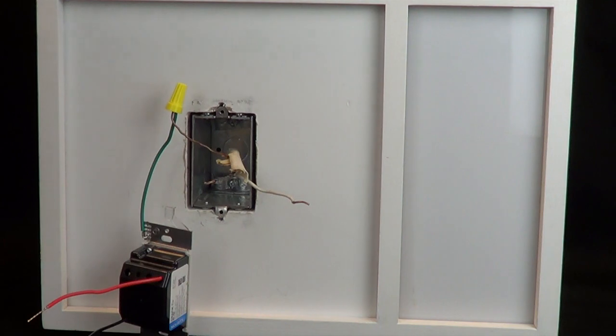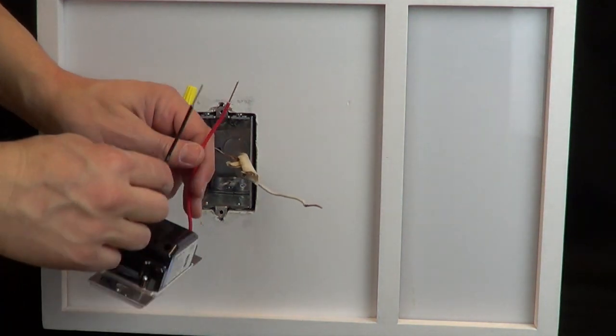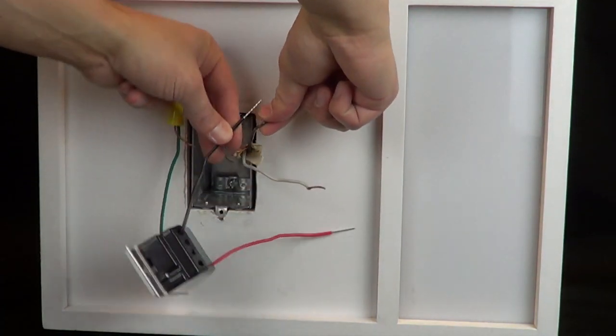Next, connect the hot, live wire from the old switch to the black wire on the dimmer, using a wire cap.